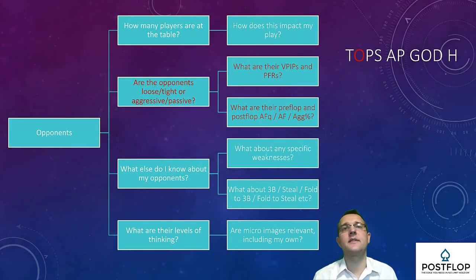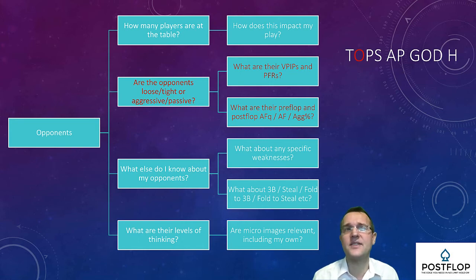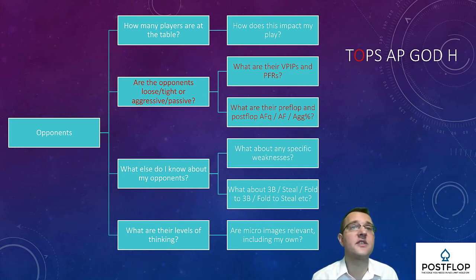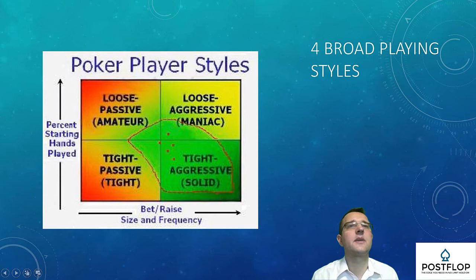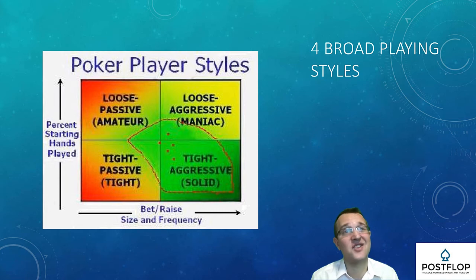The second opponent question is aimed at the entire table: how tight or loose is the table, and how aggressive or passive is it? I'd recommend keeping your thoughts broad at this point. If you're playing online, scan the table statistics, or look at each player's VPIP and PFR — this should give you the information you need. There may be other statistics such as aggression, but don't go into too much detail yet. Try to fit each opponent into one of four broad playing style boxes — this is intentionally crude, but gives you a useful idea of how the table as a whole is playing.